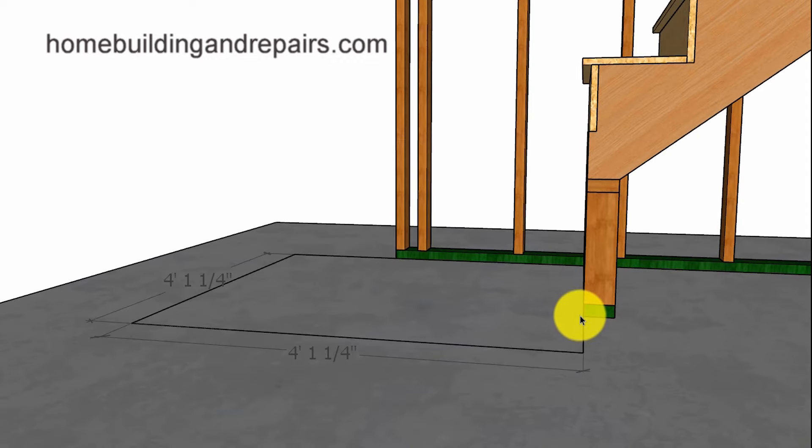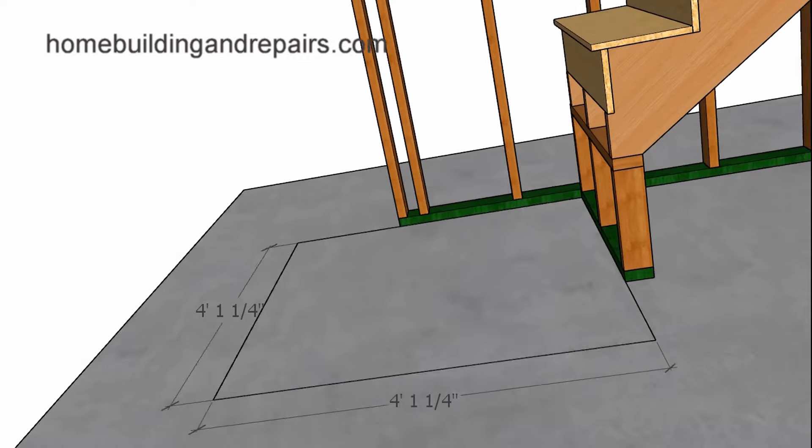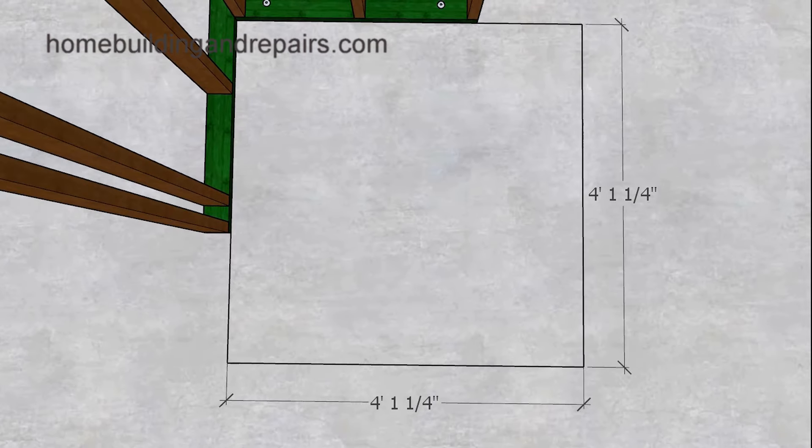And another thing I want to point out is that we're going to be starting with the face of the riser here and not the front of the tread. Which means you might need to make this box a little bit larger. If your layout lines are going to represent the front of the tread instead of the front of the riser.